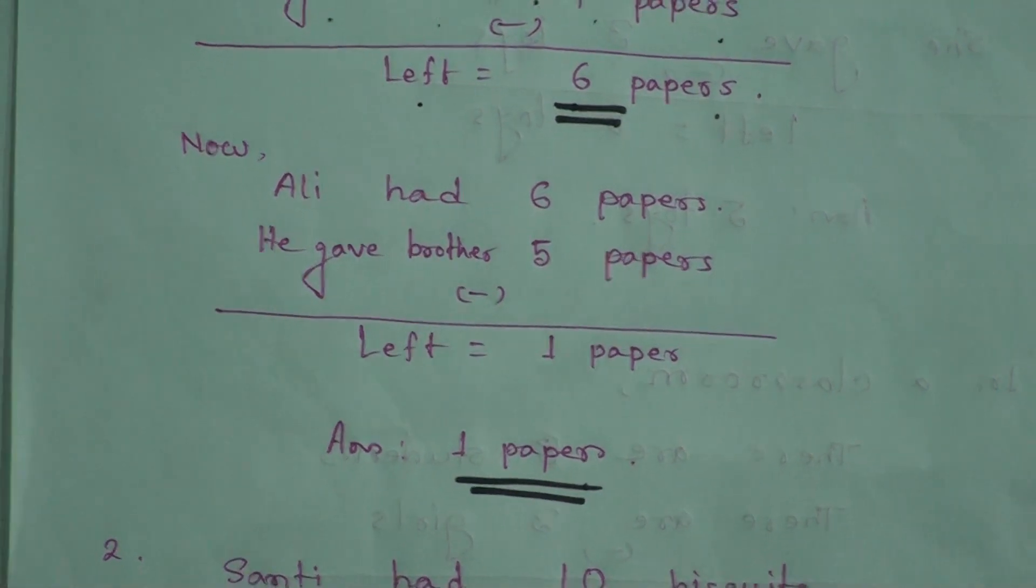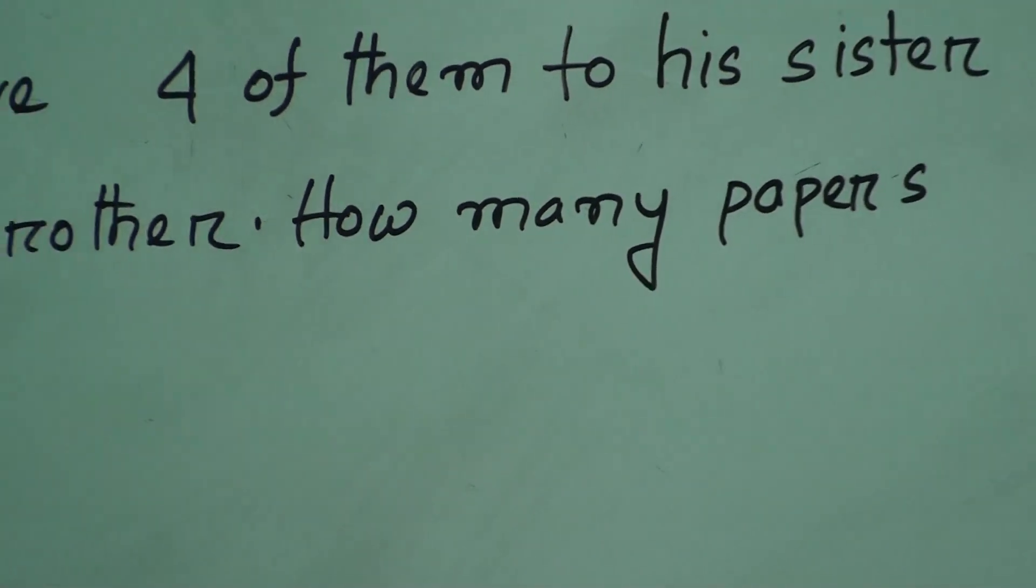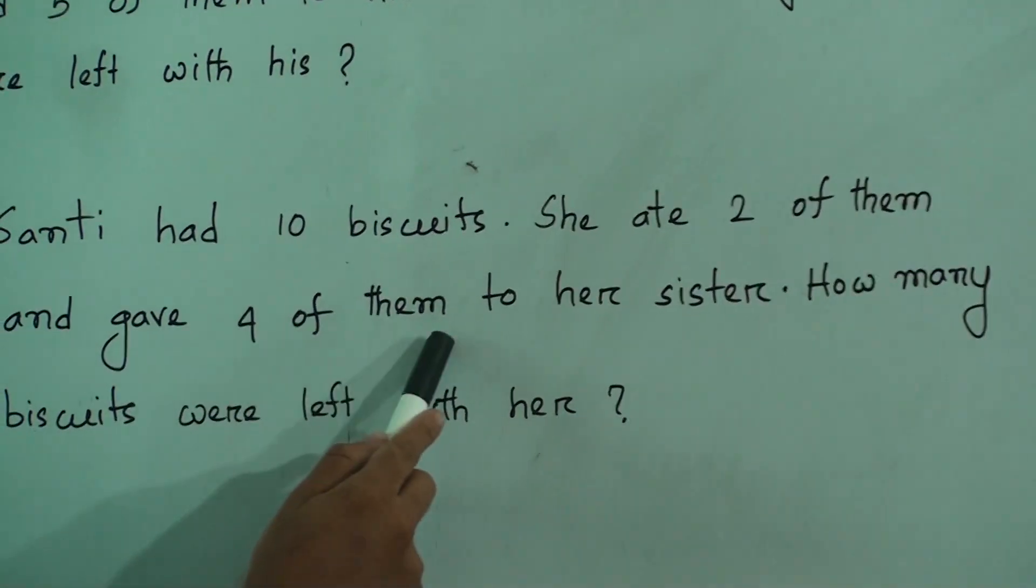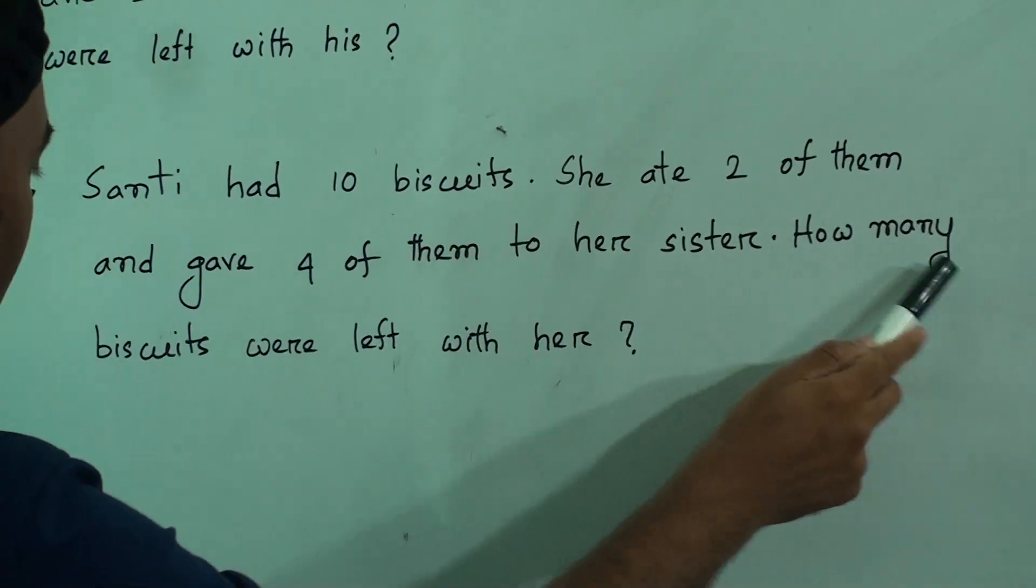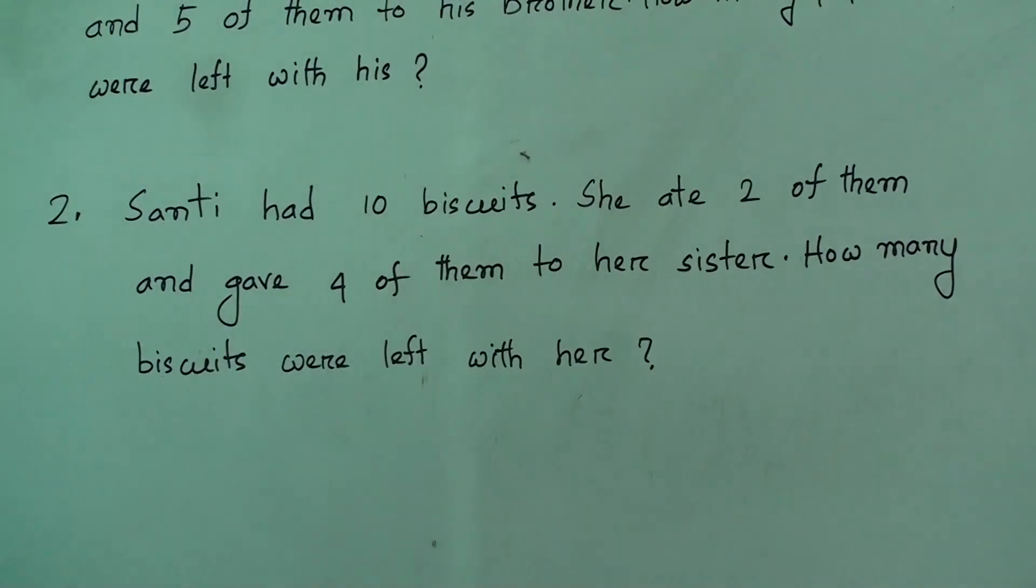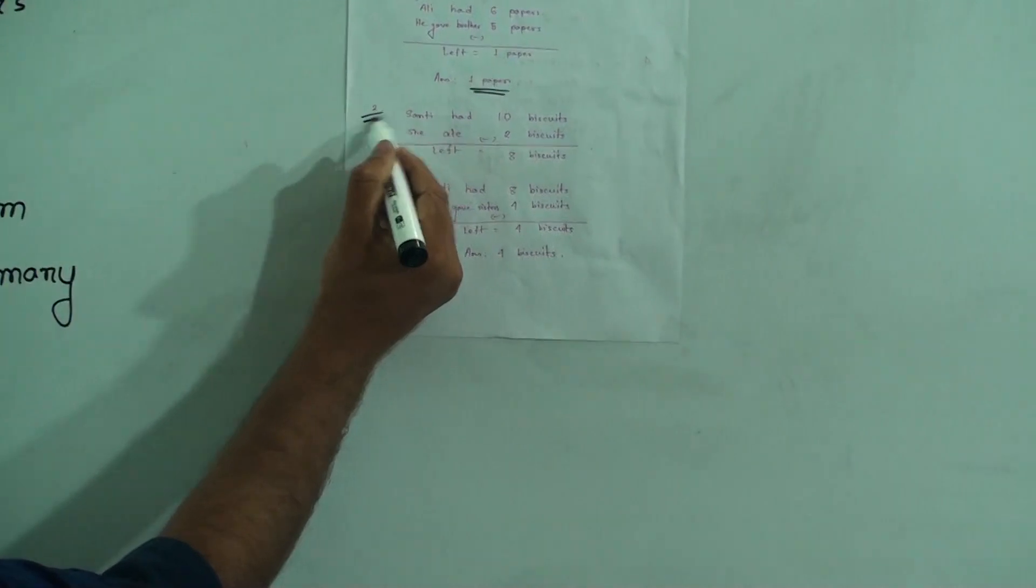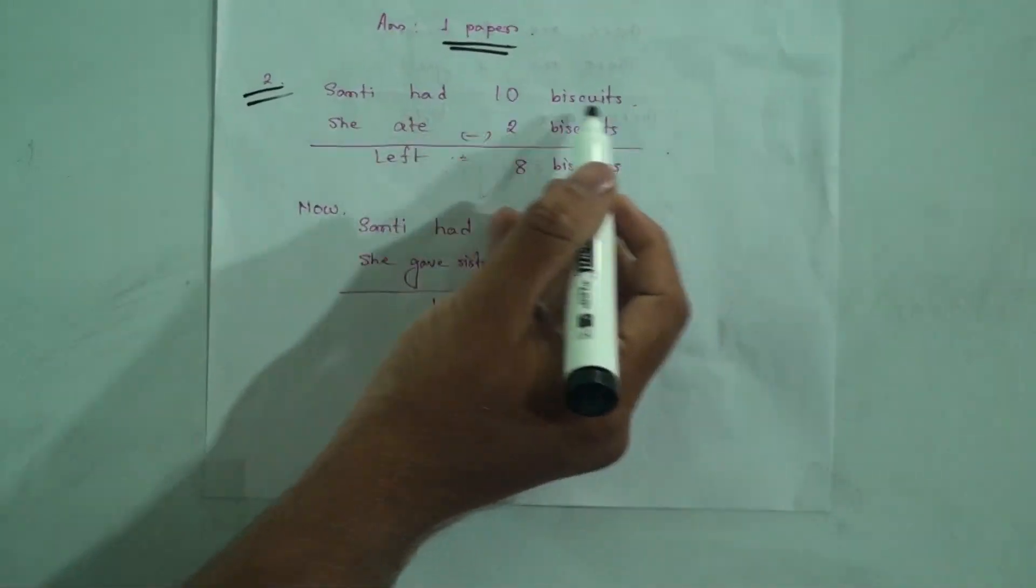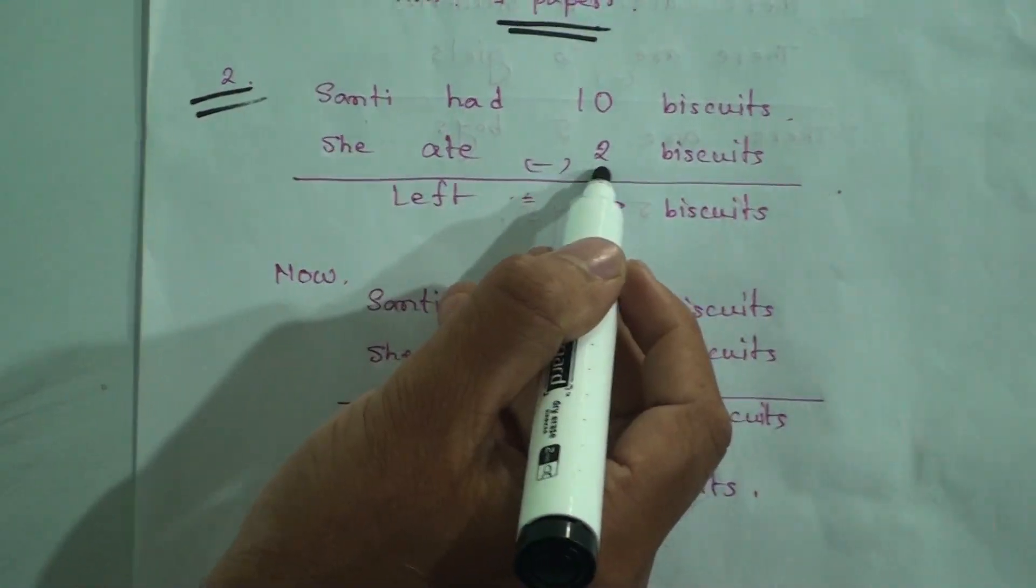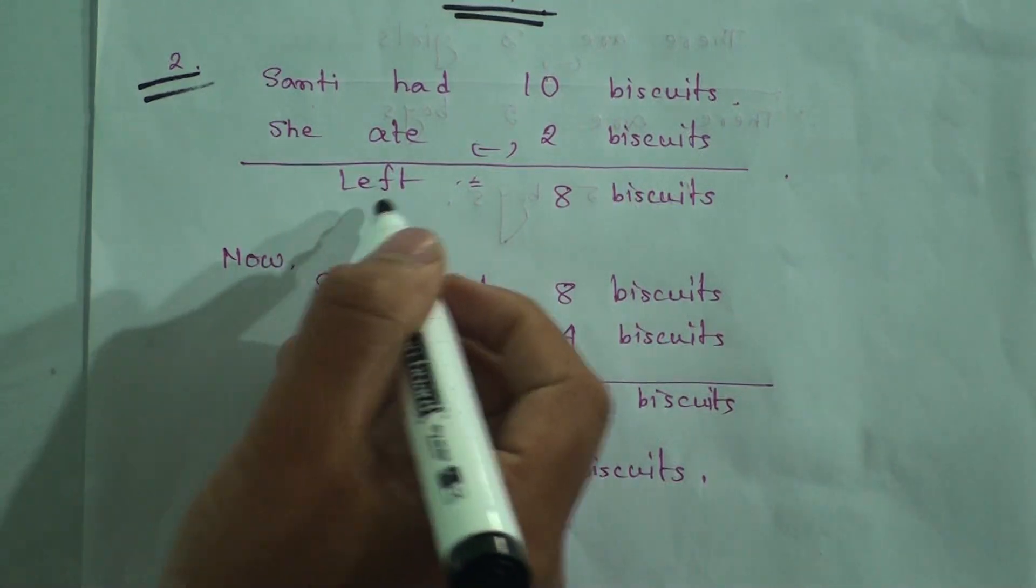Question 2: Shanti had 10 biscuits. She ate 2 of them and gave 4 of them to her sister. How many biscuits are left with her? Shanti had 10 biscuits, she ate 2 biscuits. Now subtract 2 from 10, it will be 8 biscuits. So left is 8 biscuits.